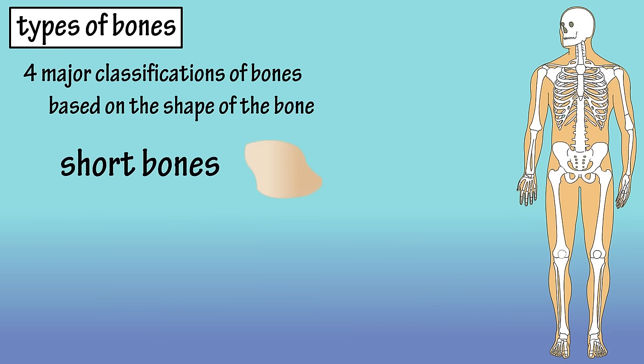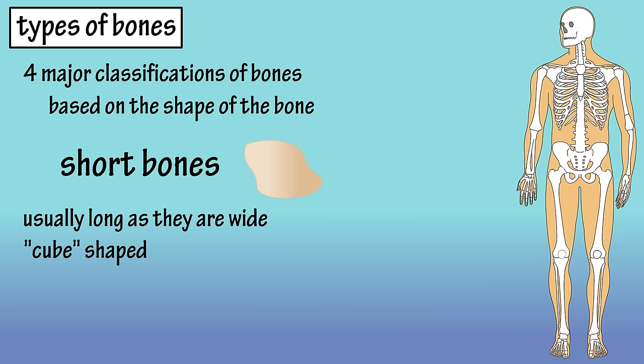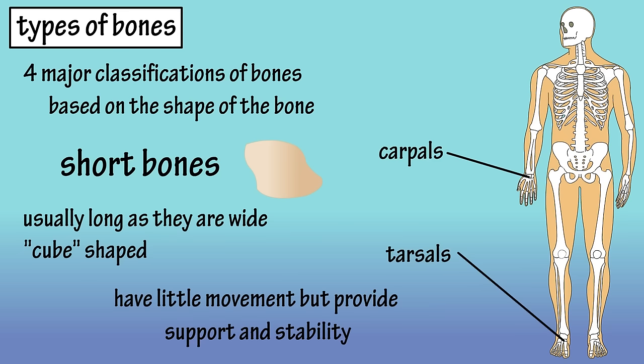Short bones are usually as long as they are wide and they are often described as being cube-shaped. Examples of short bones are the carpals in the wrist or the tarsal bones located in the ankle region. Short bones have little to no movement and they provide support and stability.